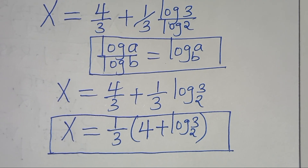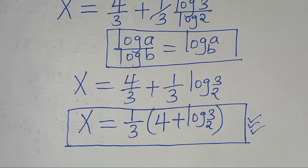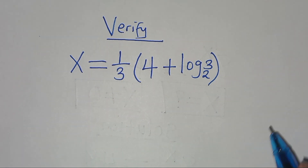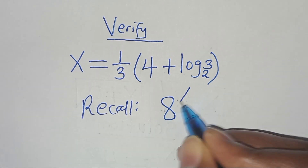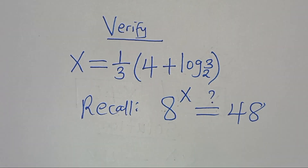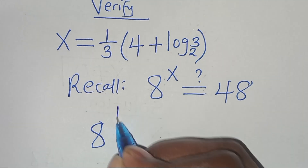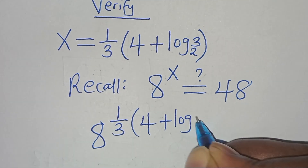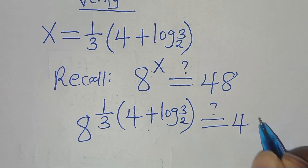The next step is to verify that this value of x satisfies the equation. We substitute x = (1/3)·(4 + log₂(3)) back into 8^x, which should give us 48.